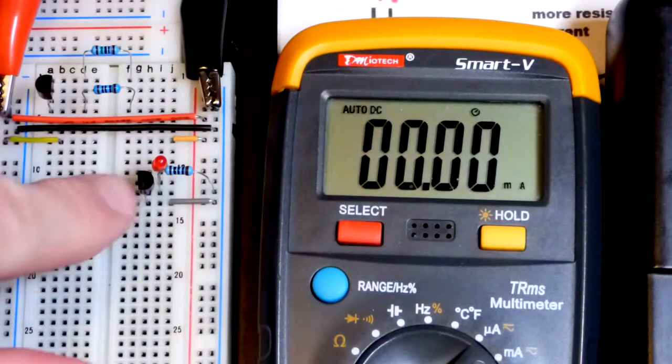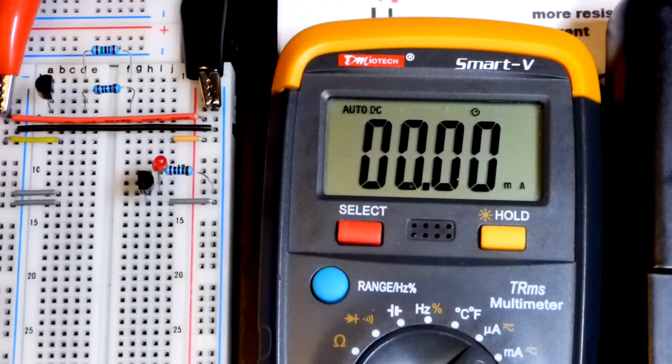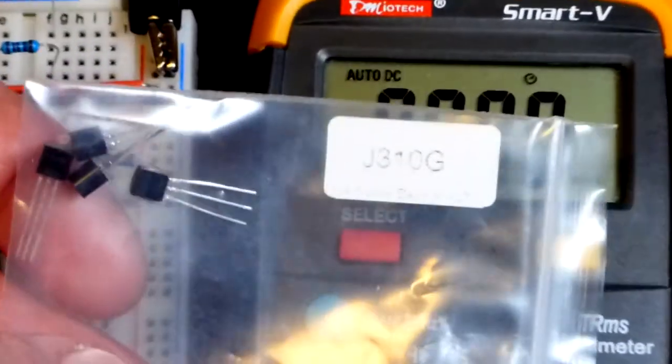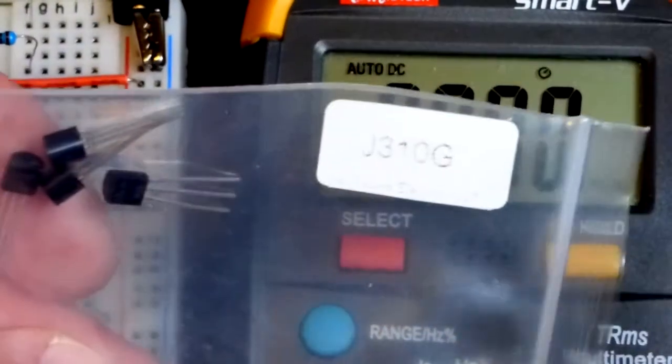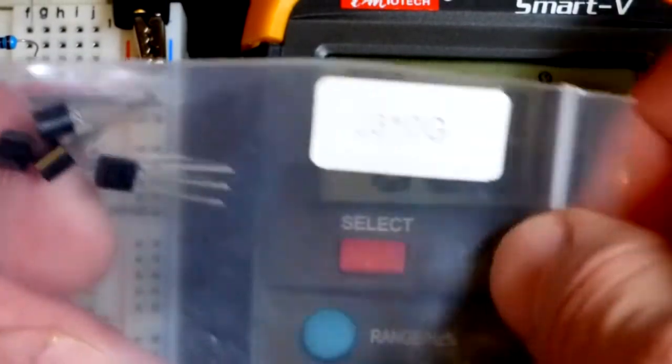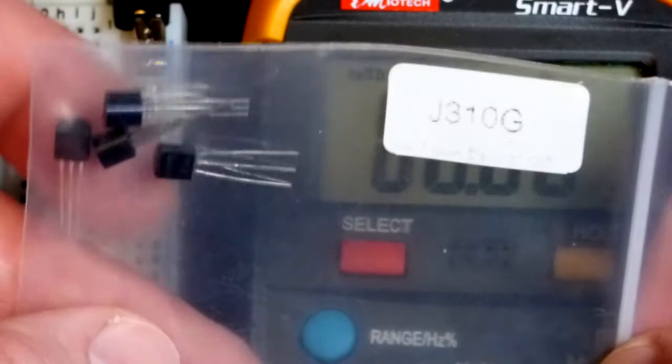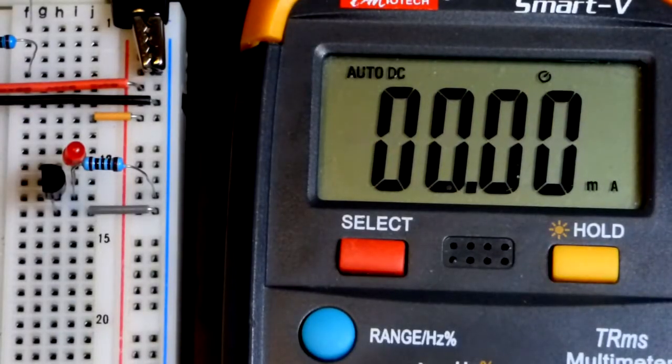But otherwise if you need a current source, I grabbed this J310 from the Joe Knows Electronics Semiconductor Kit. Here's the biggie that it came in. And unfortunately the Joe Knows Electronics is kind of faded there, but that's the semiconductor kit. I link it all over the place on my stuff because I really love this kit. It has a bunch of different semiconductors.